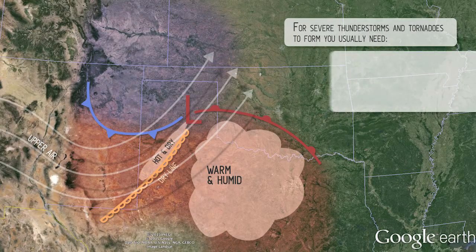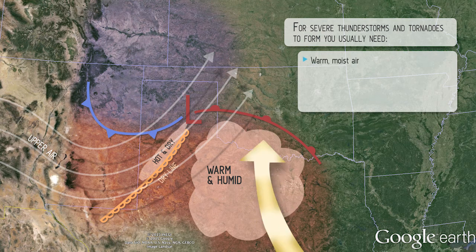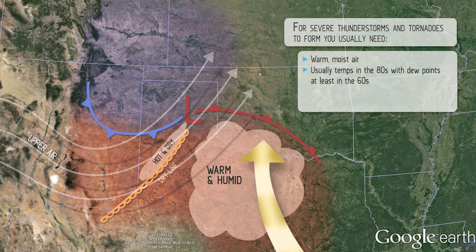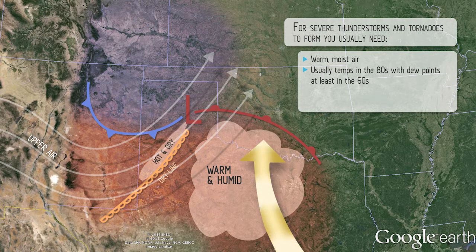You need warm, moist air from the Gulf of Mexico coming in, brisk southerly winds — usually in the southeasterly or southerly component. Sometimes they come in from the southwest and you have tornadoes too, so there are lots of ifs, ands, and buts. I usually look for temperatures in the 80s and dew points in the 60s. Dew point is just a measure of the moisture in the atmosphere.